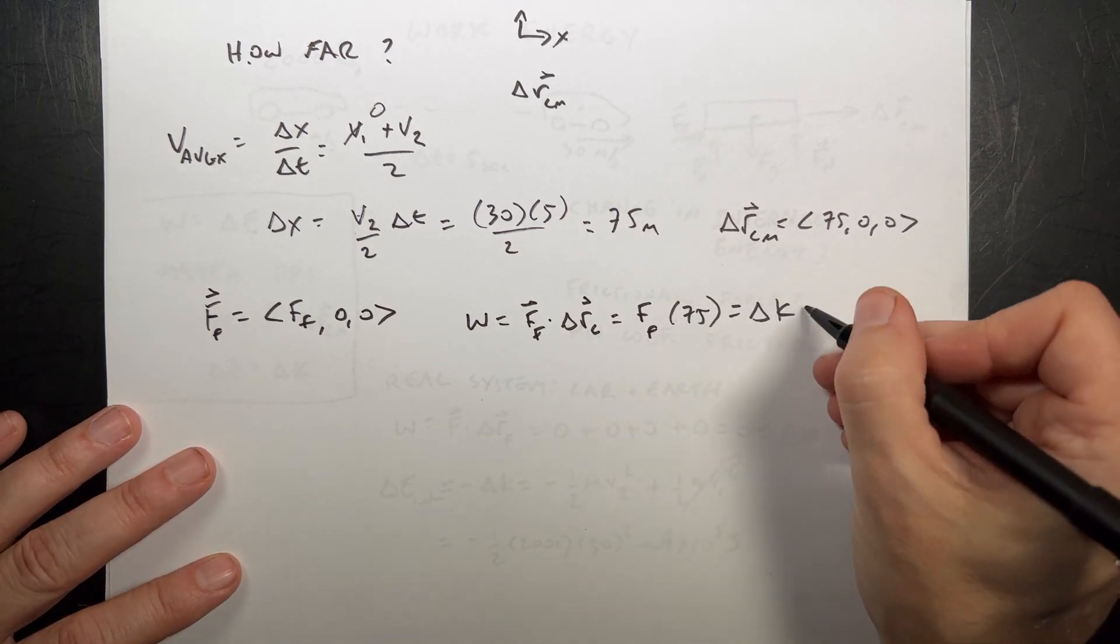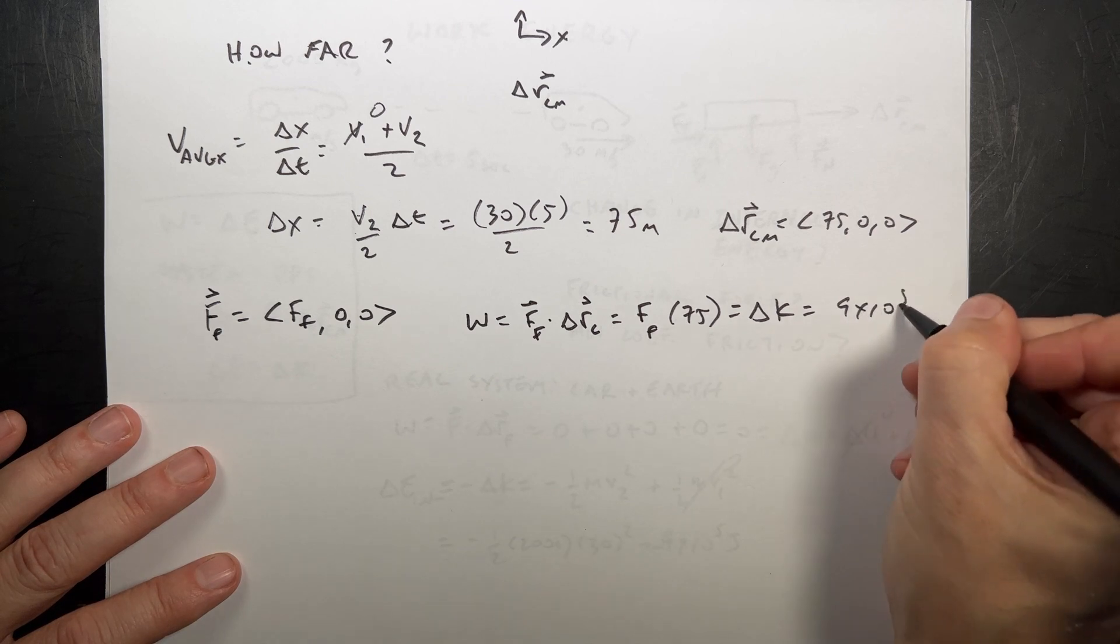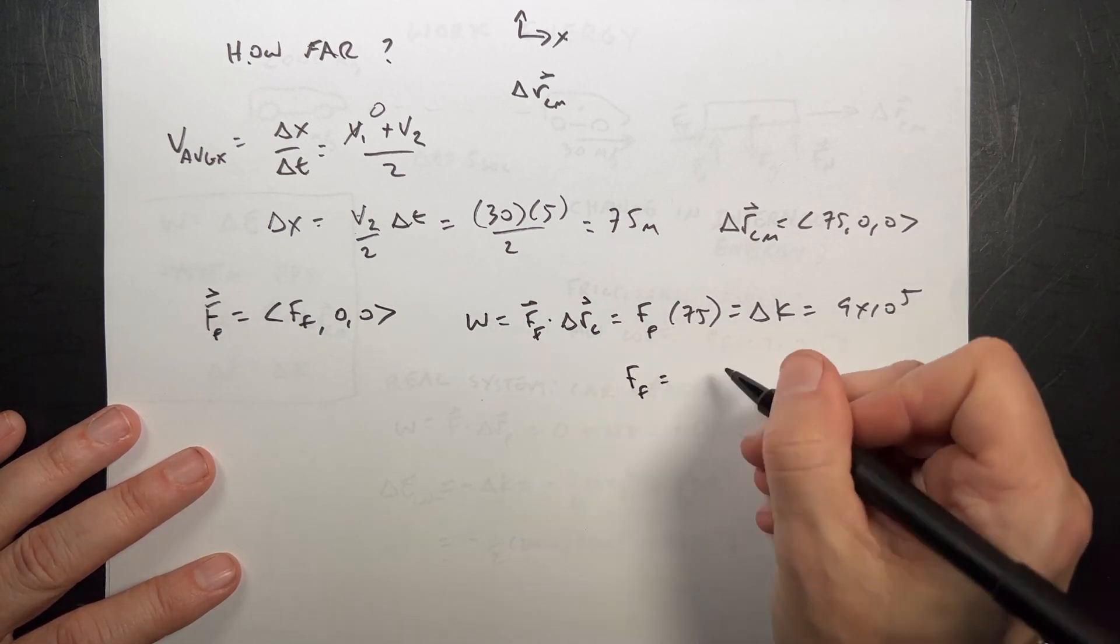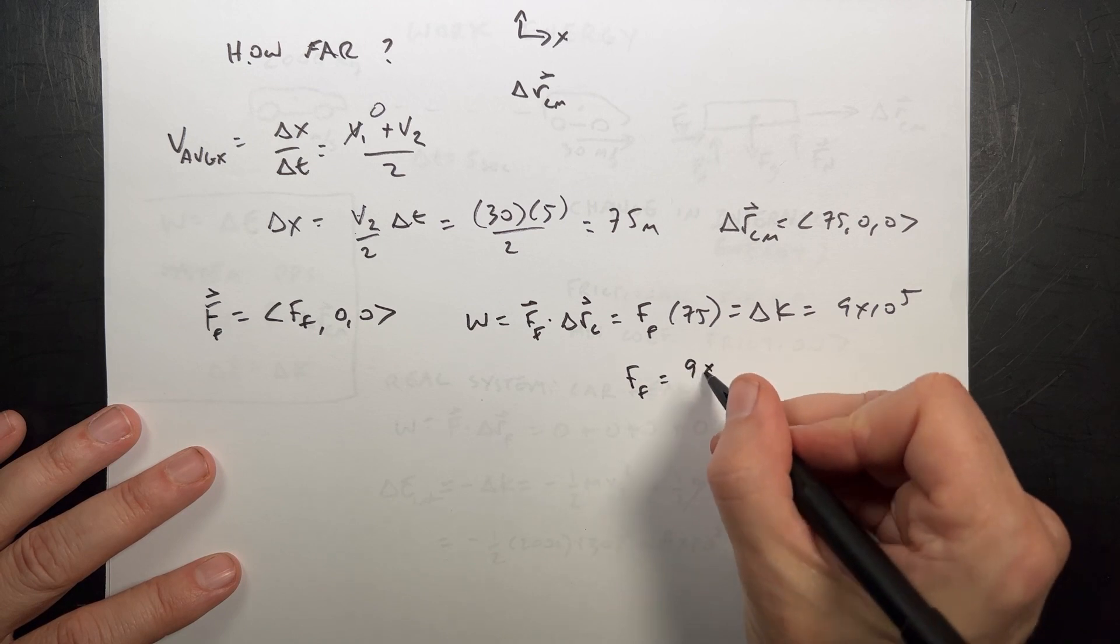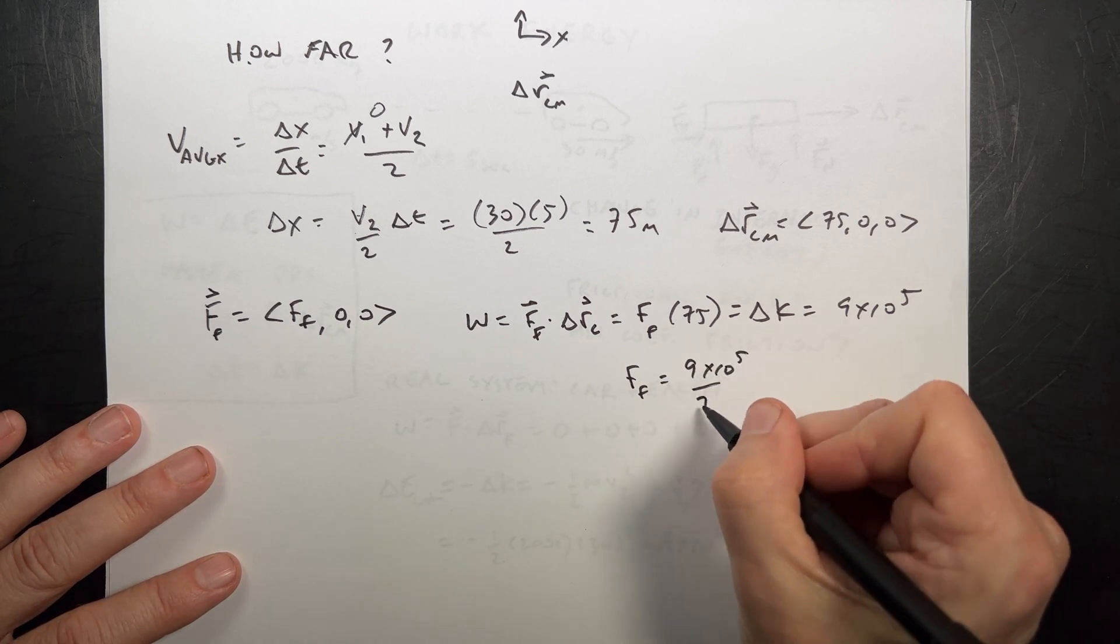But I already know the change in kinetic energy is 9 times 10 to the 5th. So I can solve for the frictional force ff. It's going to be equal to 9 times 10 to the 5th. Divided by 75.